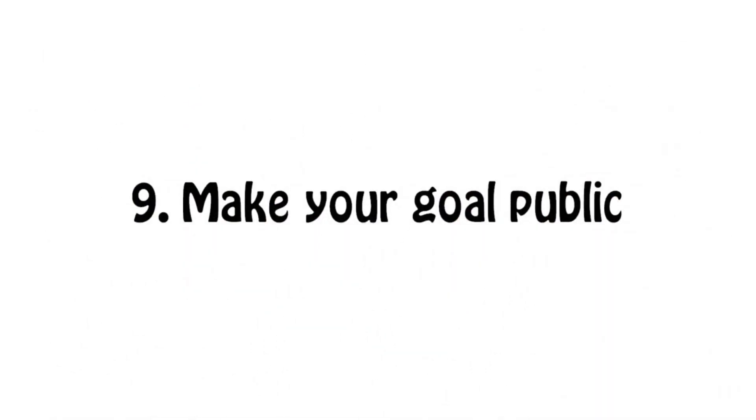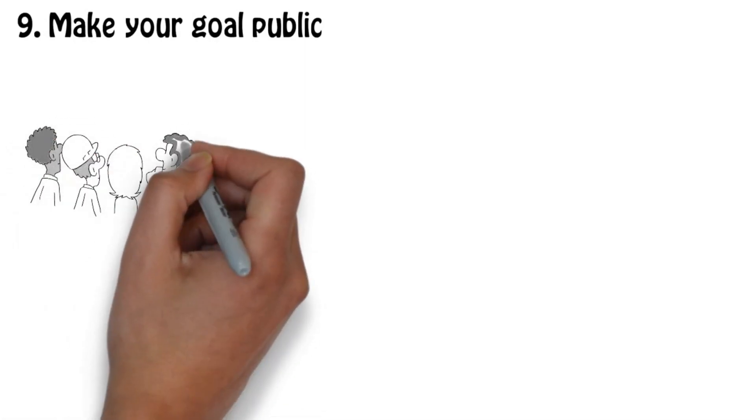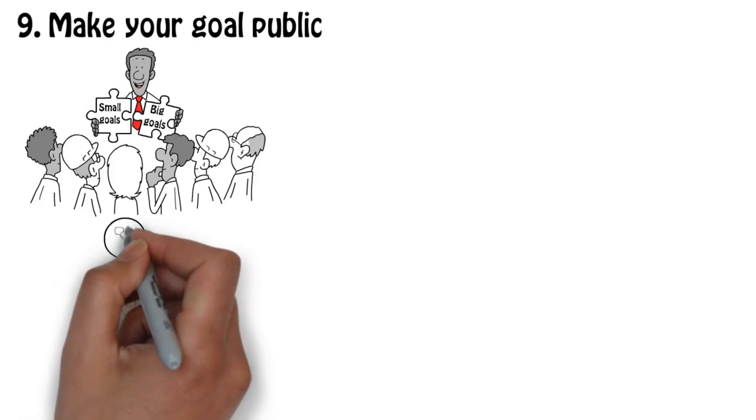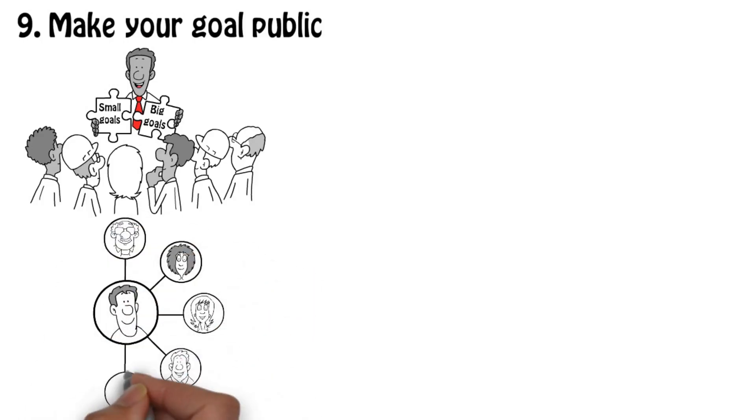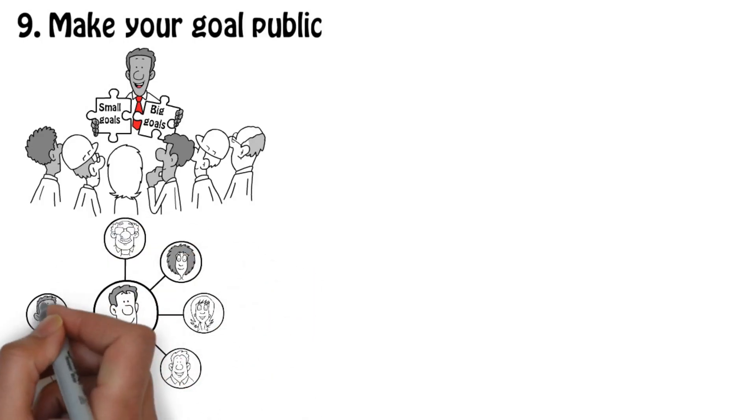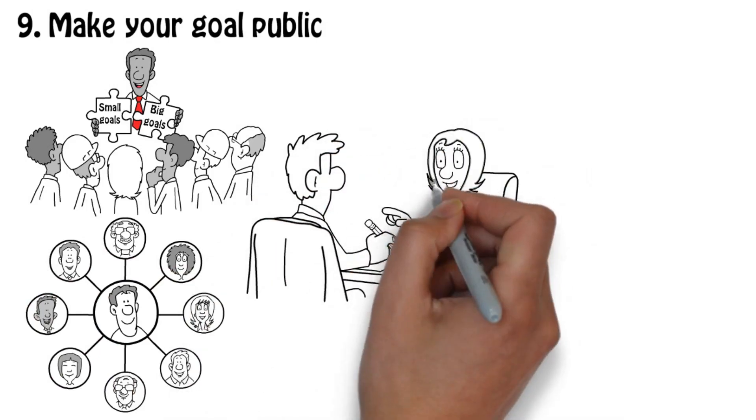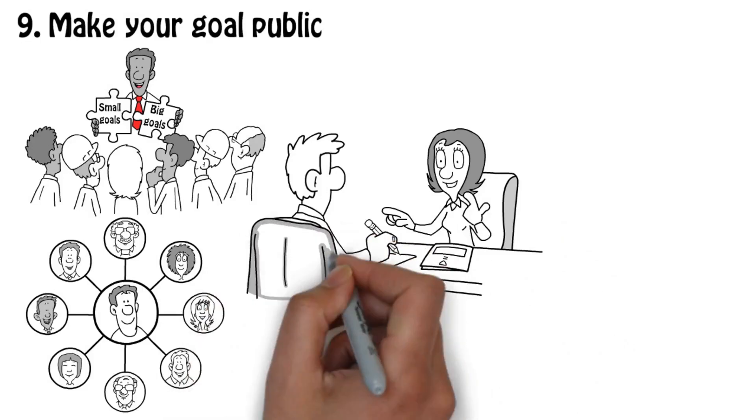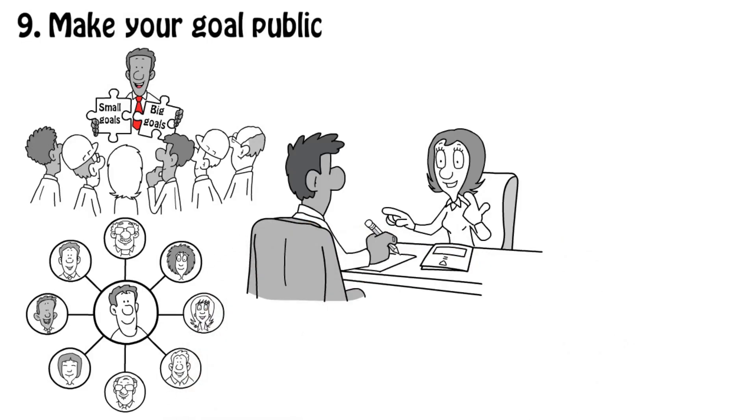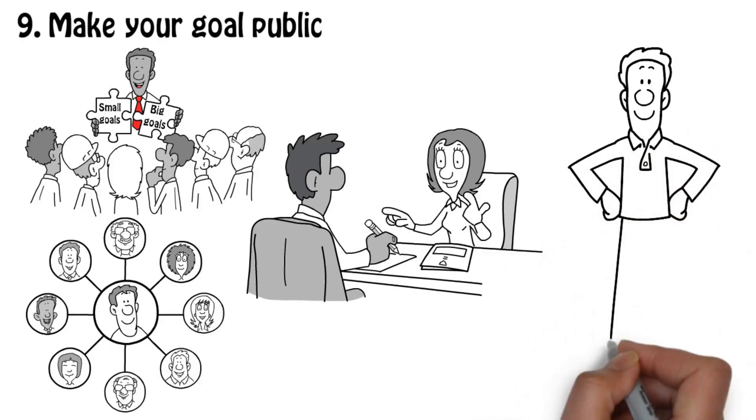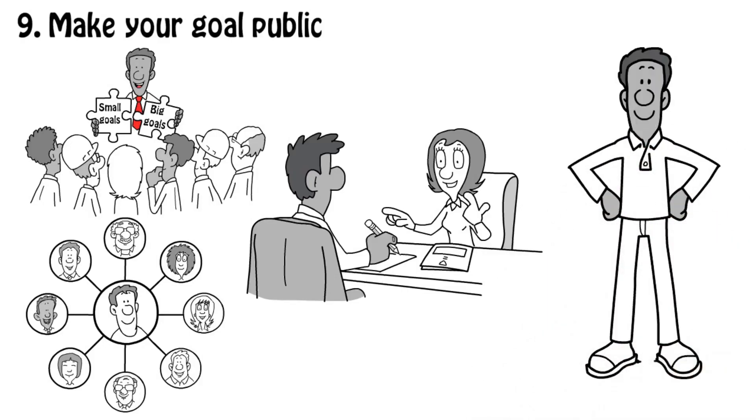Number 9: Make your goal public. Making your goal public is a technique that is really effective for many people. You don't have to join an organization or broadcast your goal on Facebook to make your goal public. Having an accountability partner or goal buddy, a single person interested in your efforts can be just as effective. Knowing that others are going to be monitoring your results ensures commitment to the goal and is extremely motivating.